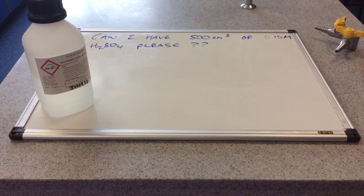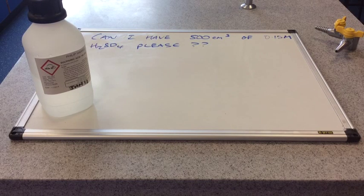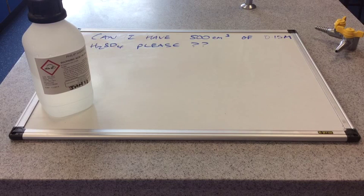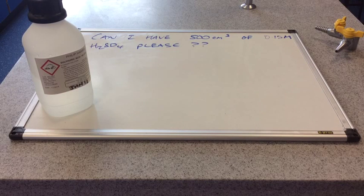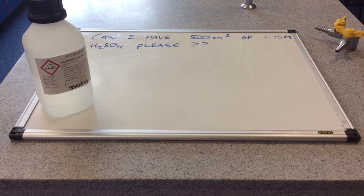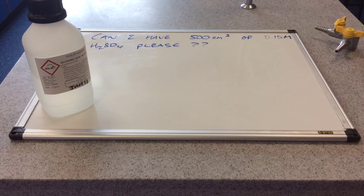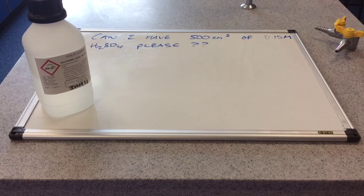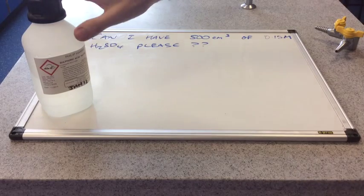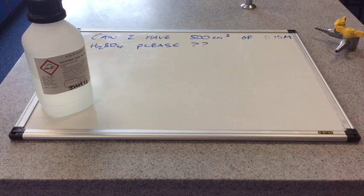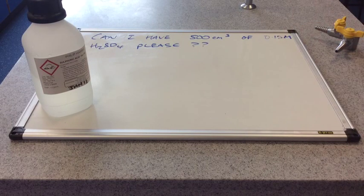So, as a chemistry teacher, I'm always putting requests into our fantastic technician, Lisa, to make up solutions for me. So a typical request, I'm doing an experiment later on in the week. I need 500 centimetres cubed of 0.15 moles per decimetre cubed sulphuric acid. So what I want you to do, or what you can have a go at doing is, how much of this do we need to dissolve in that 500 centimetres cubed of water to give us this concentration?